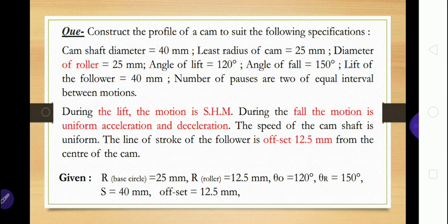The number of pauses are two of equal interval between the motions. Angle of outstroke theta O is 120° and return stroke theta R is 150°, summing to 270°. So 360° minus 270° leaves 90° remaining. Since two dwell periods are of equal interval, 90° divided by 2 gives 45° each for the dwell periods.